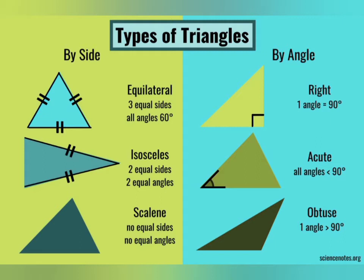Classification by angles: Right angle triangle has one angle that is 90 degrees. Acute angle triangle has all angles less than 90 degrees. Obtuse angle triangle has one angle greater than 90 degrees.